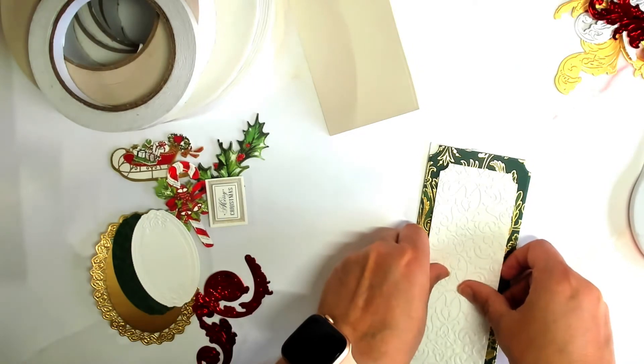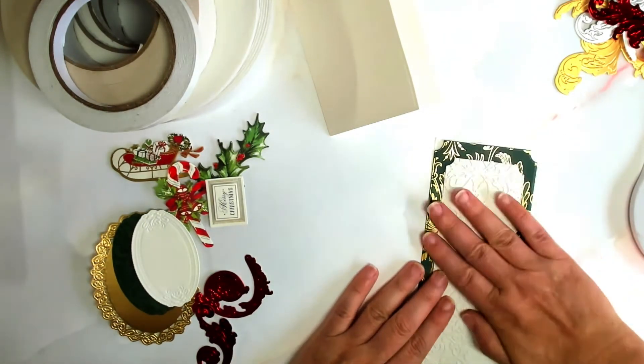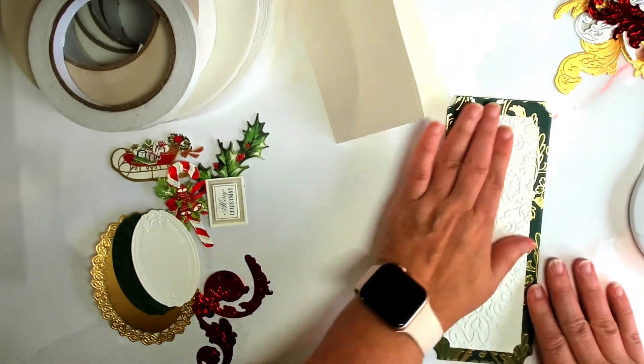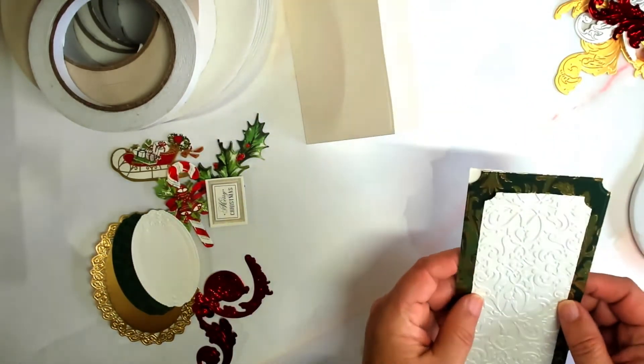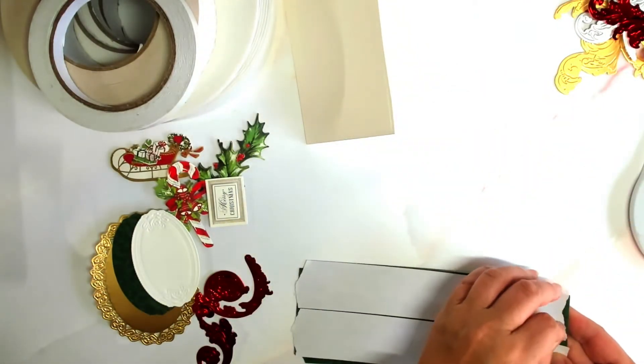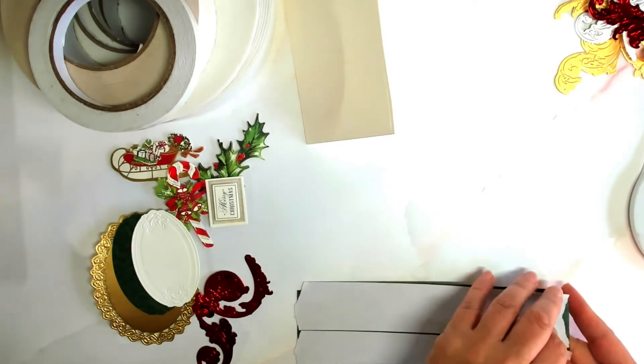Now that the second layer, which is the ivory cardstock, is attached to the first layer, which is the Christmas cardstock, I'm going to flip over the Christmas cardstock and remove the backing of the double-sided adhesive and attach it to the base of the card.